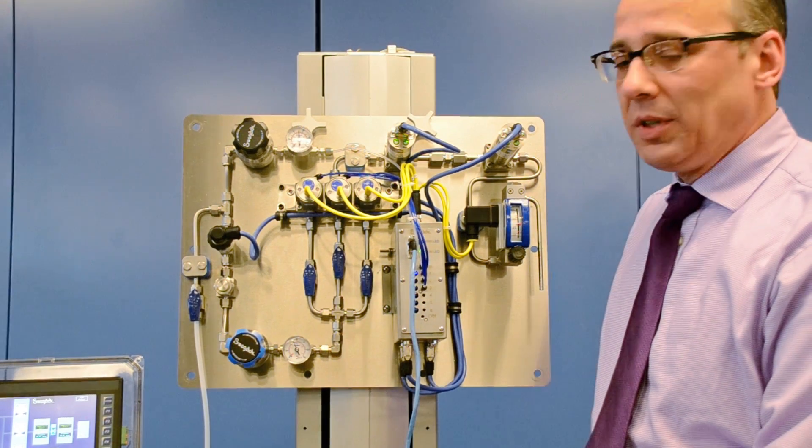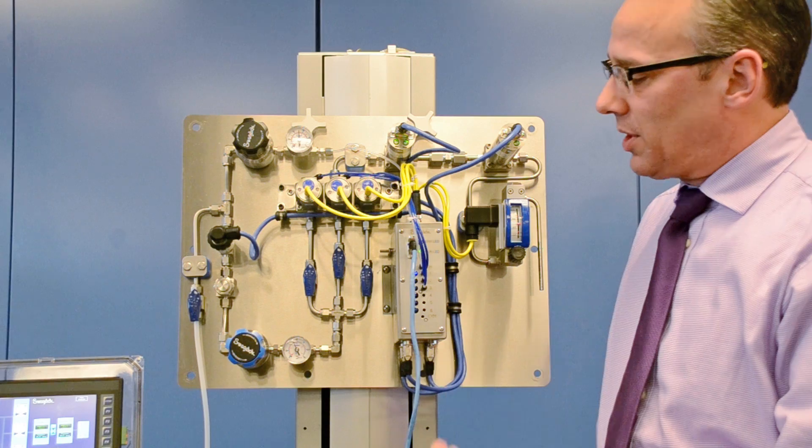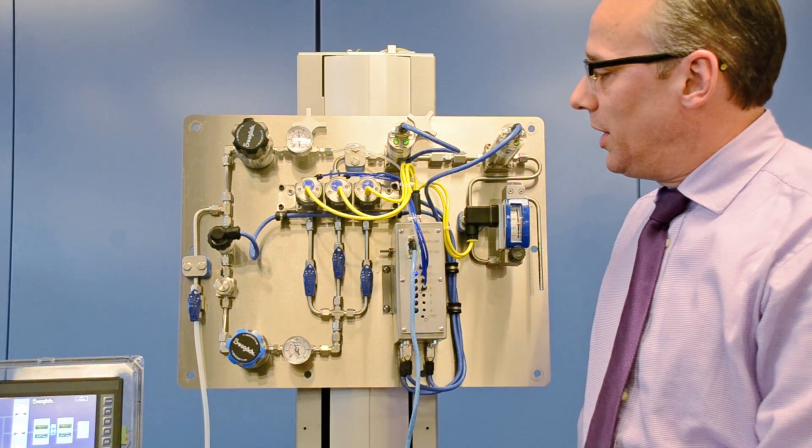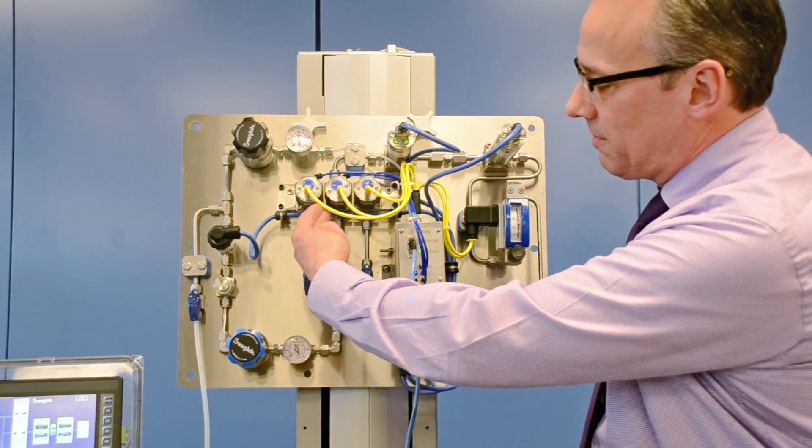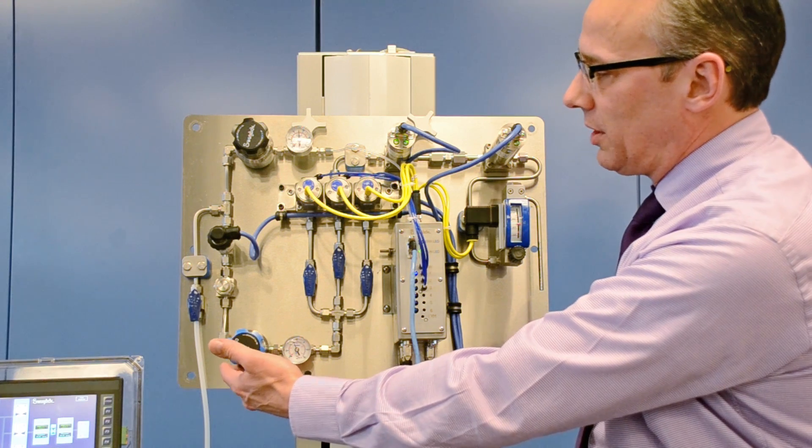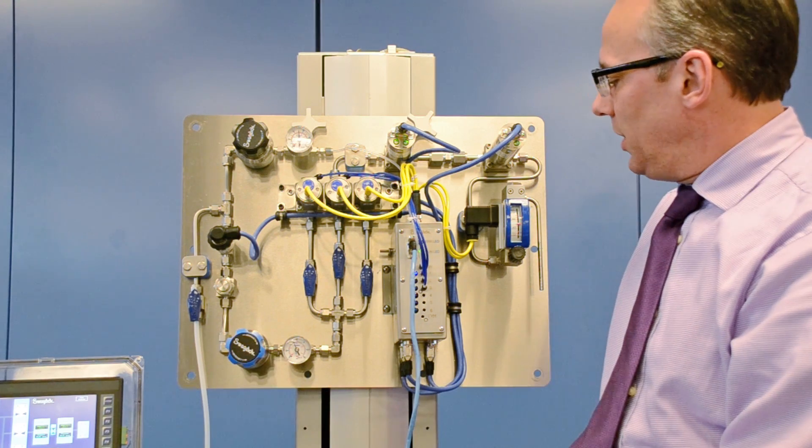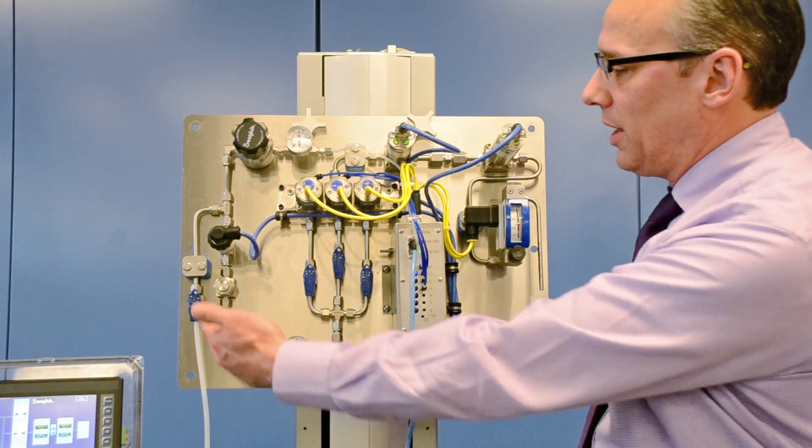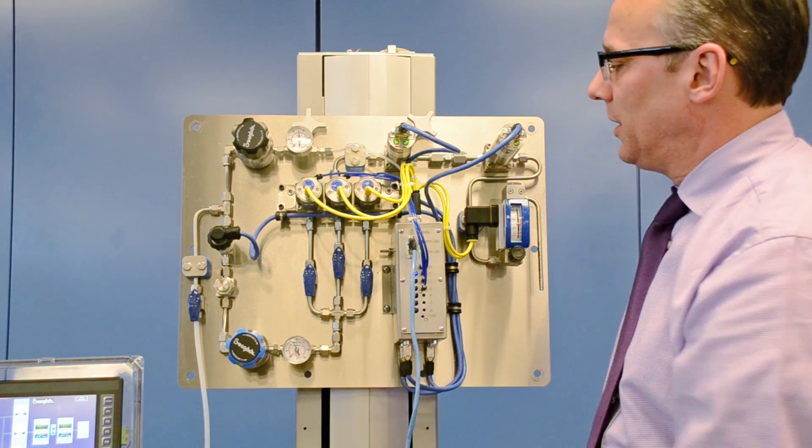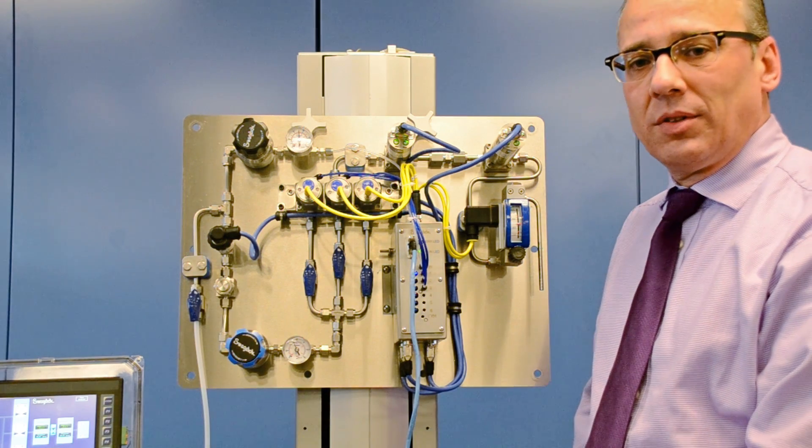Now in this system we have traditional Swagelok fluid components. We have valves for selecting streams, we have some pressure regulators for regulating pressure, and we have some transducers for monitoring inlet pressure and other pressures and temperatures in the system.